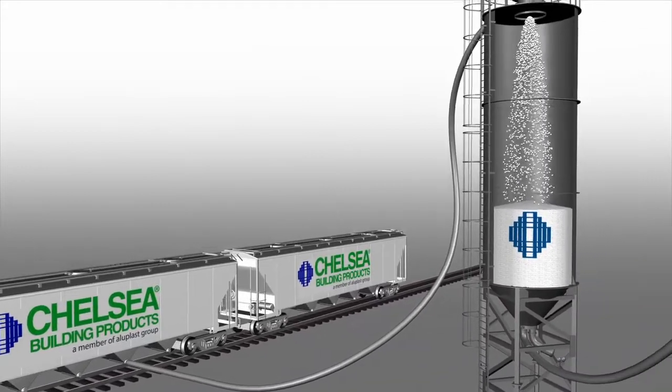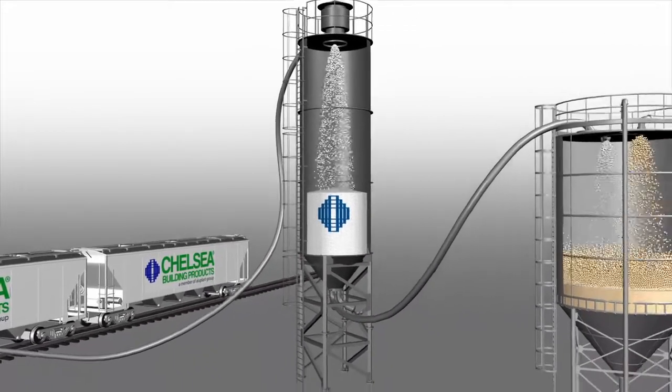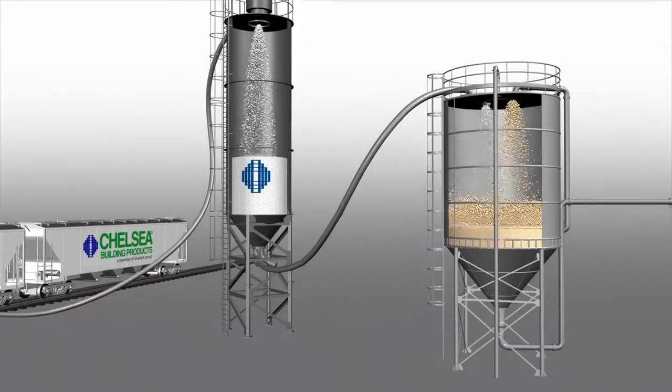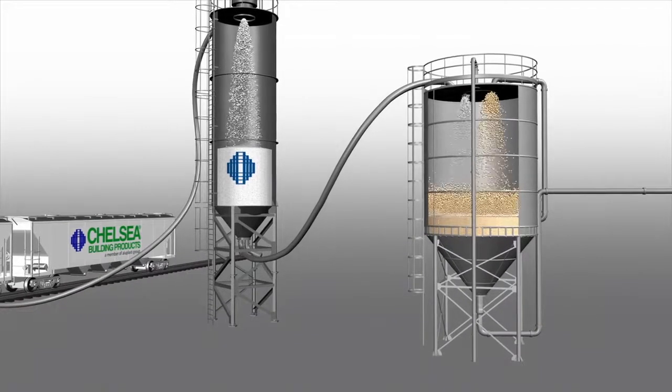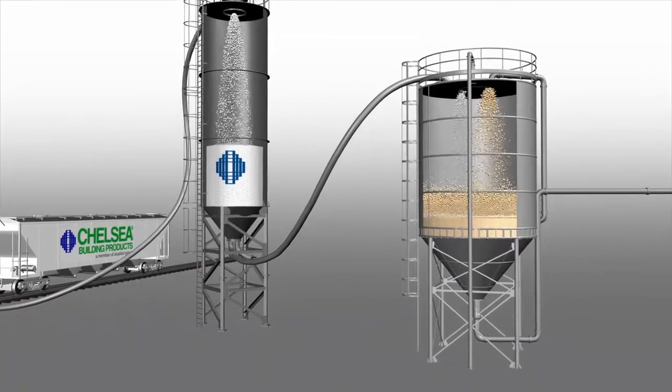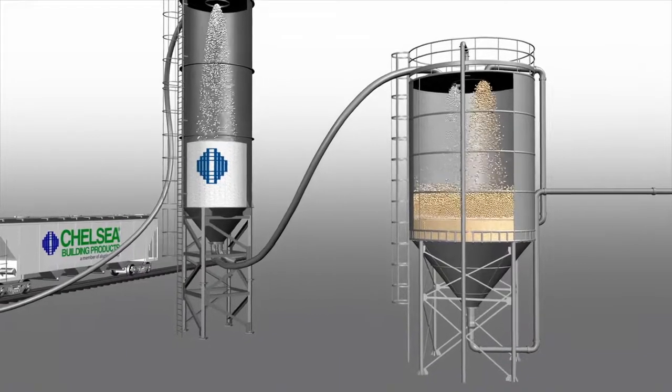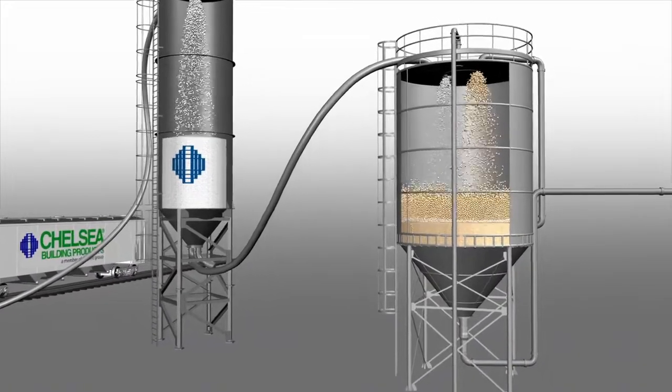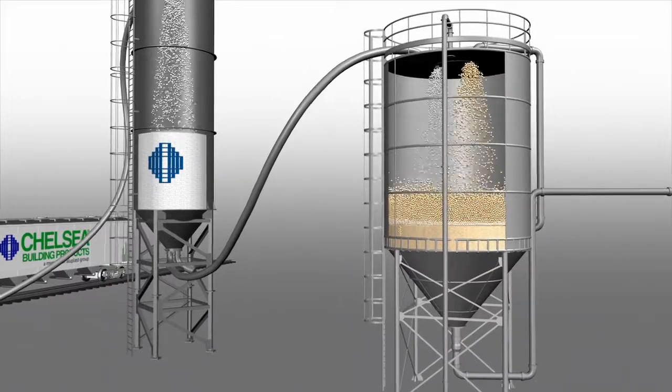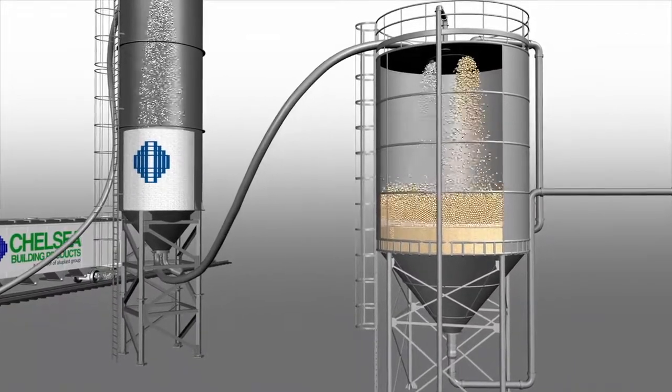The resin, along with other micro-ingredients, are combined and processed in the blending operation to create the PVC compound suitable for the extrusion process. These proprietary formulations improve weatherability, add custom color, and improve durability, impact resistance, and processability.